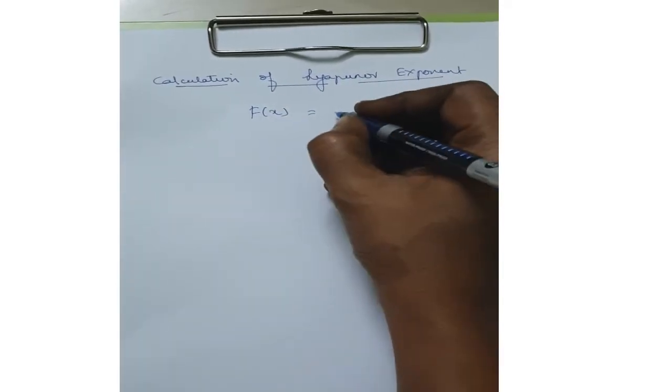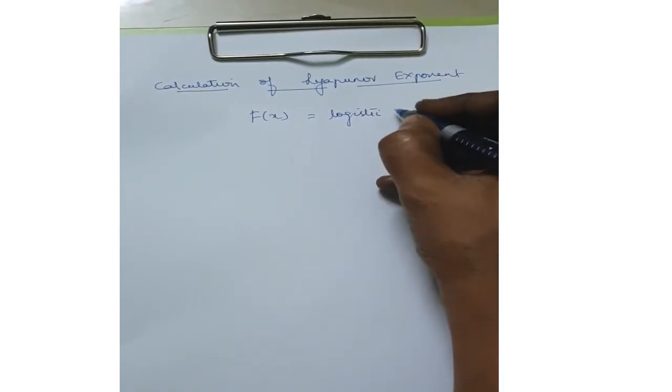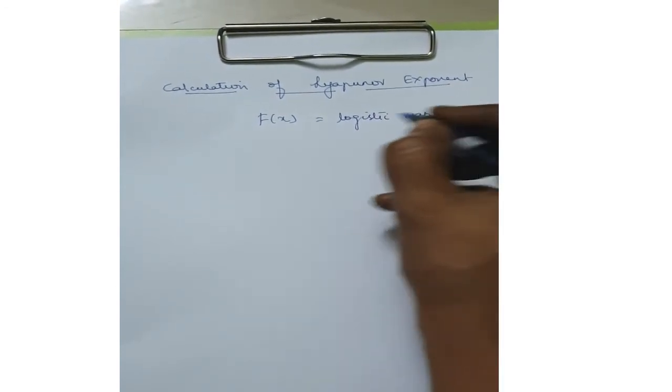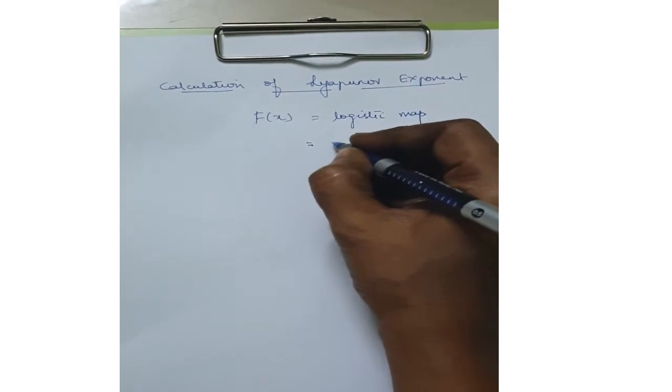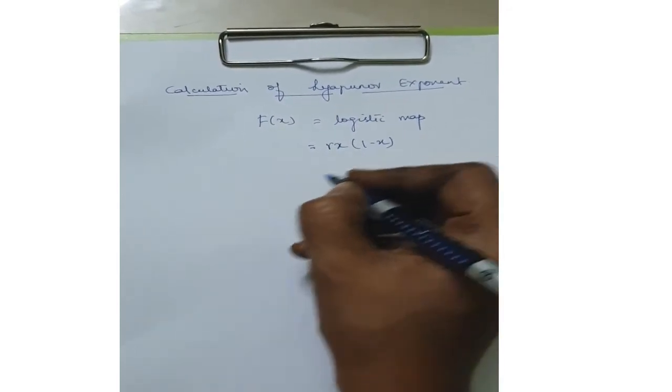We consider f(x) is the logistic map and the equation of logistic map is rx into 1 minus x.